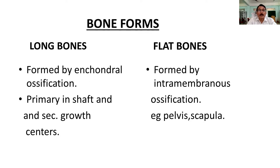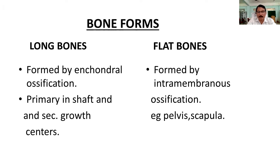What are the different types of bone? Normally there are approximately 260 bones, but essentially these bones can be classified into two groups: long bones and flat bones. Long bones are basically developed by endochondral ossification. These long bones include the femur, humerus, and upper limb bones. There are primary ossification centers in the shaft and secondary ossification centers in the ends of the bone — sometimes one, sometimes two, sometimes more, as seen in the humerus.